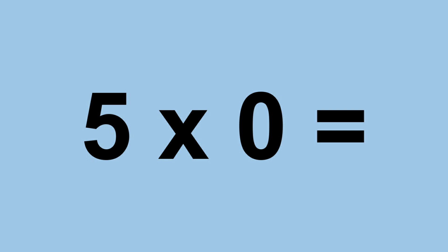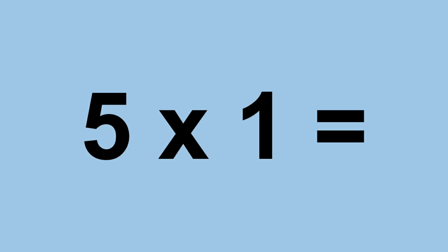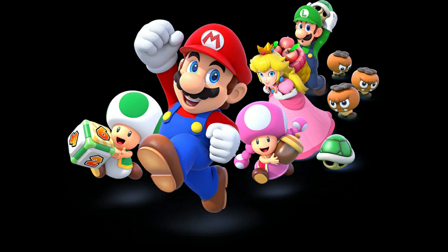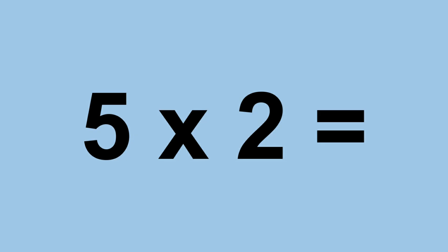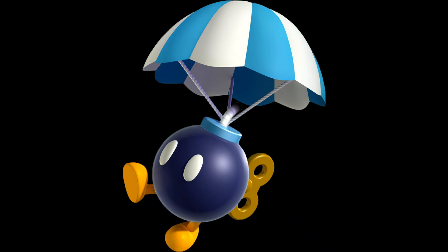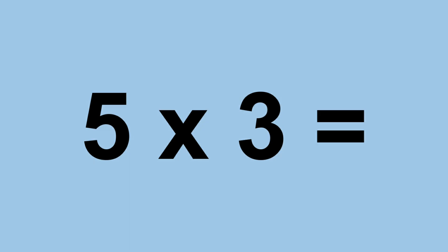Five times zero equals zero. Five times one equals five. Five times two equals ten. Five times three equals fifteen.